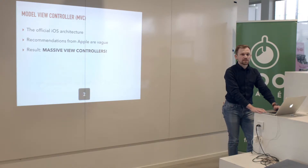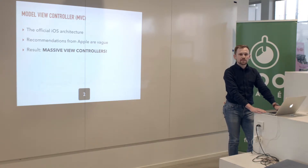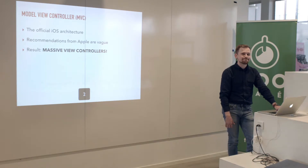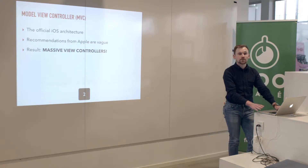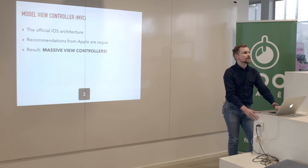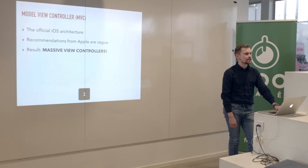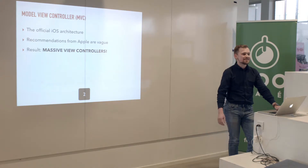Since Apple gets to recommend things, they provide some guidelines about how to use this architecture. But these guidelines sound like: view controllers should be autonomous, view controllers should not know about other view controllers' state or inner structure. Well, that's true but it doesn't really tell us much. These recommendations are quite vague — they are open to interpretations, and there are countless interpretations of MVC by different people.